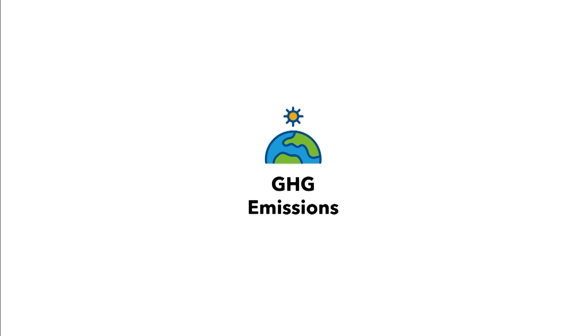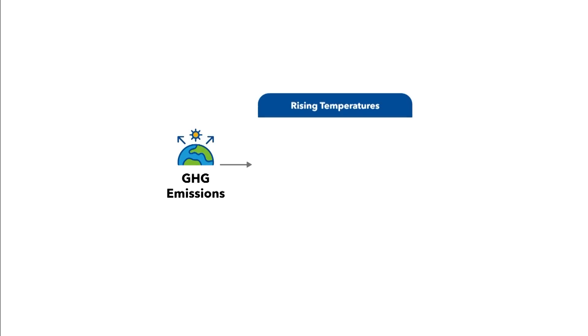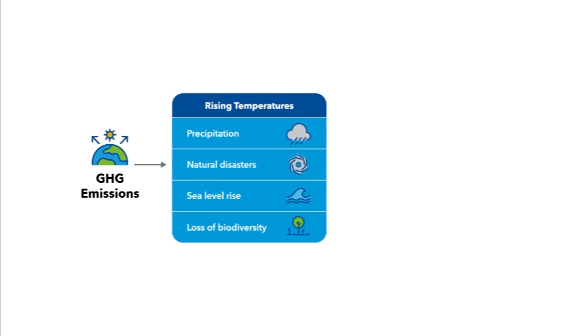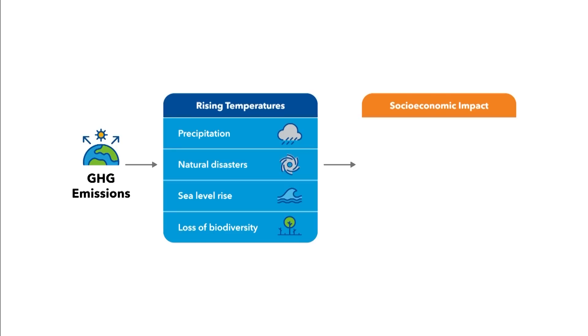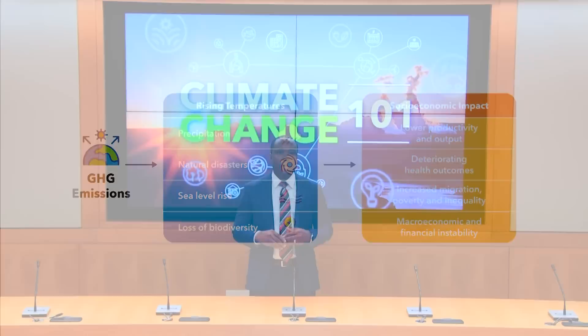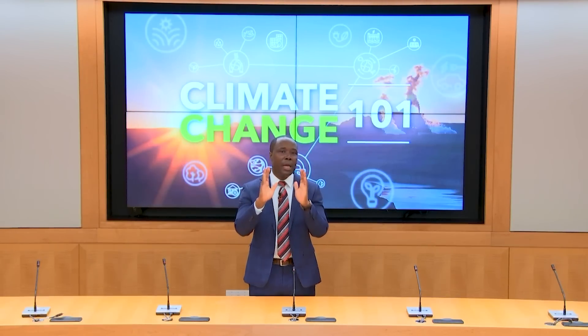It is now scientifically clear that human activity is the leading cause of climate change. As our carbon footprints get larger, so are the increases in surface temperature, natural disasters, sea level rise, and the loss of biodiversity. The resulting imbalances in the Earth's climate system have wide-ranging implications for socioeconomic stability, lower productivity and output losses, deteriorating health outcomes, increased migration, poverty, and inequality, and heightened macroeconomic and financial instability. To avoid the worst of these damages, there is a clear path forward: greenhouse gas emissions need to be substantially reduced as quickly as possible.